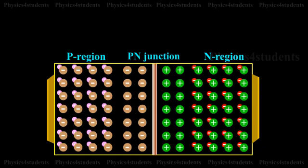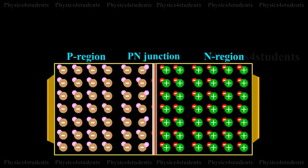Similarly, holes crossing the junction from the P region into the N region recombine with electrons in the N region very close to the junction.